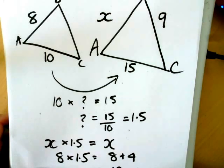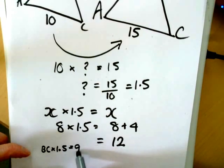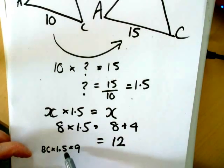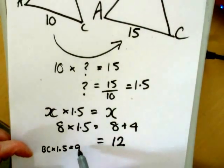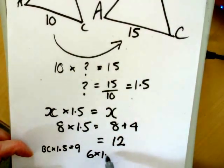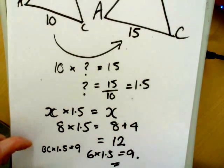Well, little BC times 1.5 would equal 9. So you've got to think what times 1.5 would be 9, and that would be 6. 6 times 1.5 equals 9. So you can go backwards as well.